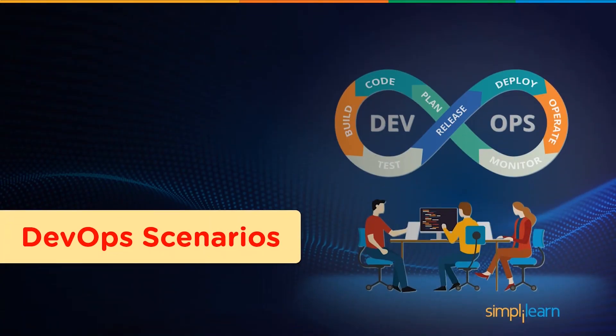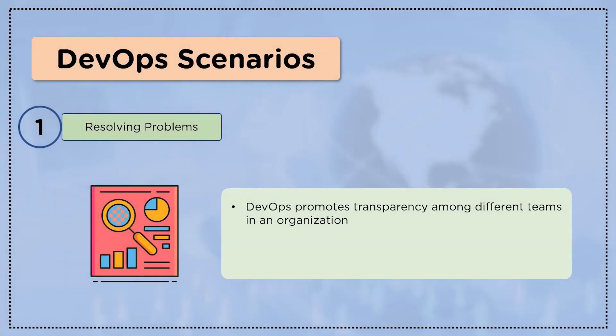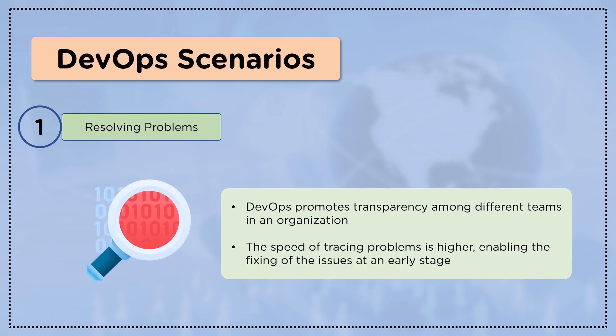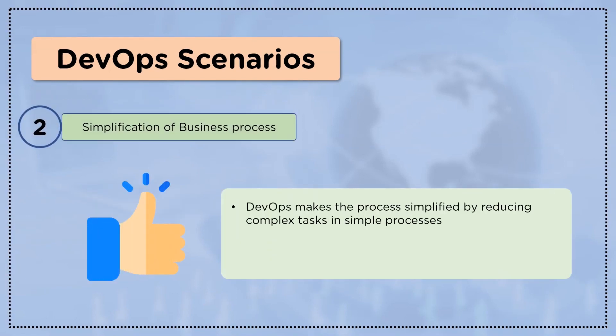Now let's have a look at our last section: DevOps scenarios. The first scenario is resolving problems. DevOps promotes transparency among different teams in an organization. The entire DevOps approach brings a development team, operations team, and security team together, making them collaborate efficiently and effectively. Successful implementation of DevOps increases the speed of tracing problems, in turn increasing the chances of problems being fixed at an early stage.